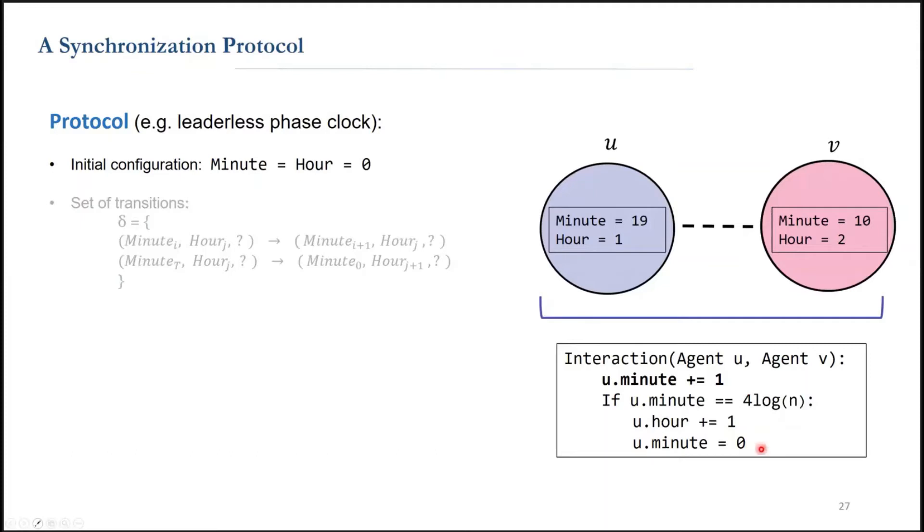All these agents are counting up, and some agents increment their minute faster than others. But we can prove by Chernoff bound that with high probability, even the fastest agent won't hit the threshold until at least two log n time has passed. So that's the main idea behind the synchronization of these agents.